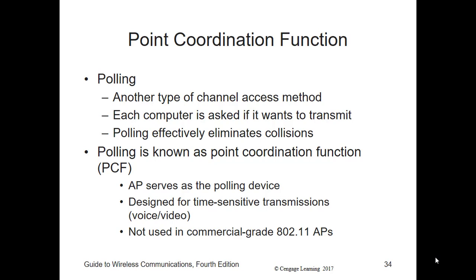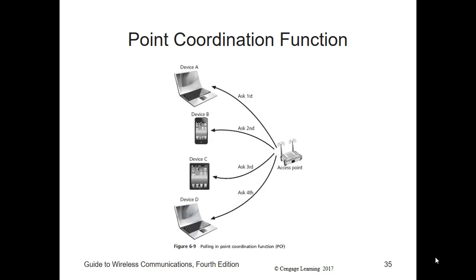It's a very orderly way of allowing a device to transmit a frame — each device is given a turn similar to token ring. Polling effectively eliminates collisions because every device must wait its turn and receive permission from the AP before it can transmit anything. This optional polling method is known as the Point Coordination Function (PCF). With PCF, the AP serves as a polling device and listens for wireless traffic. PCF must still allow some time slots for contention access, in which case the wireless LAN uses the DCF.